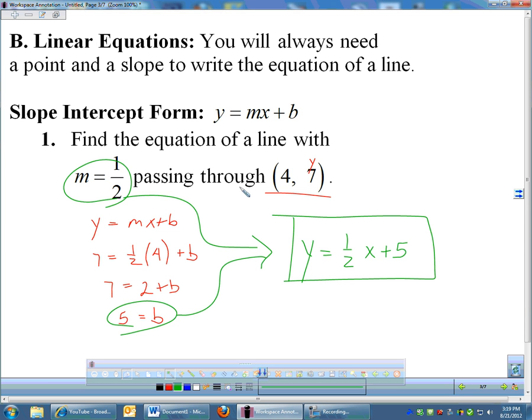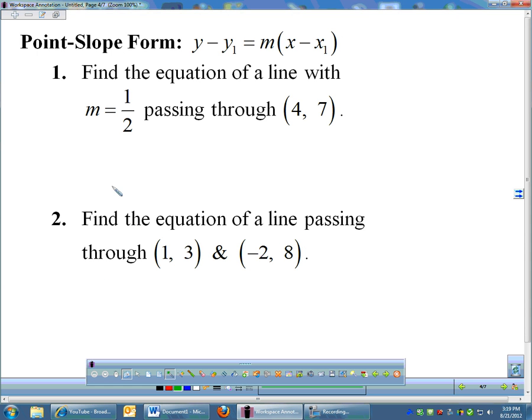The only time I use slope-intercept form is if I'm given the slope and the y-intercept. Otherwise, I use point-slope form right here, which is a perfectly valid way of writing the equation of a line. It just looks a little bit different. This is your point-slope form where x1, y1 is simply some point, so x1, y1 is a given point, and m is still the slope.